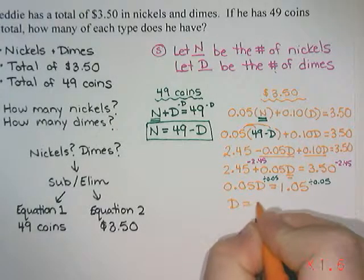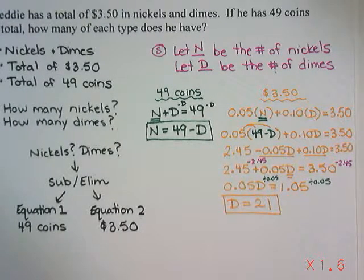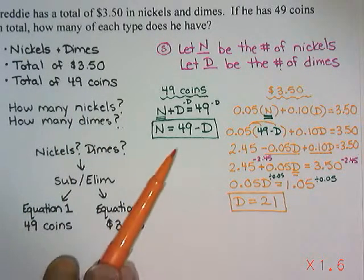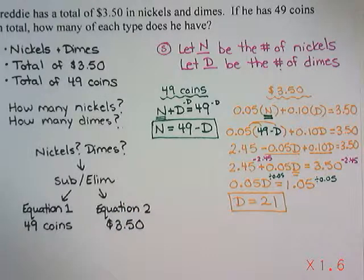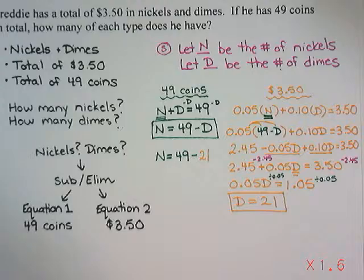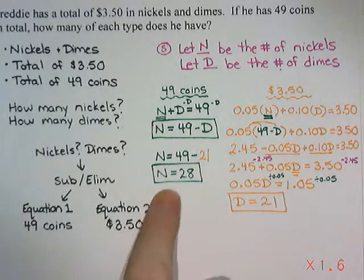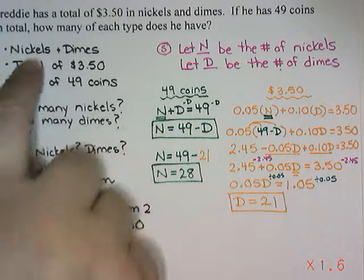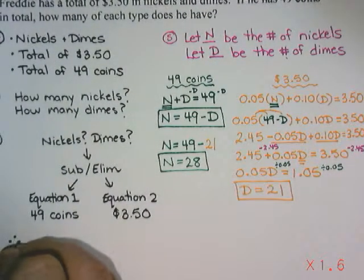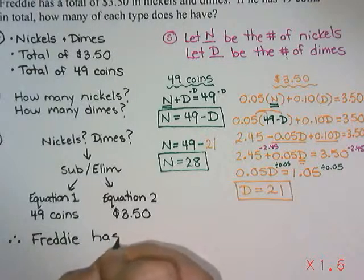So d = 21, meaning we have 21 dimes. Now I also need the number of nickels, so I substitute back: n = 49 − 21 = 28. That gives 28 nickels and 21 dimes. That brings us to P — present our answer. Therefore, Freddie has 28 nickels and 21 dimes.